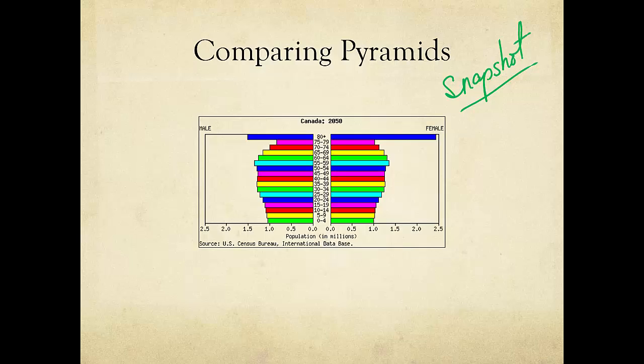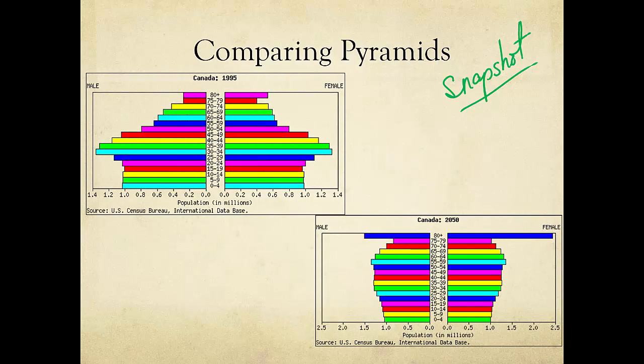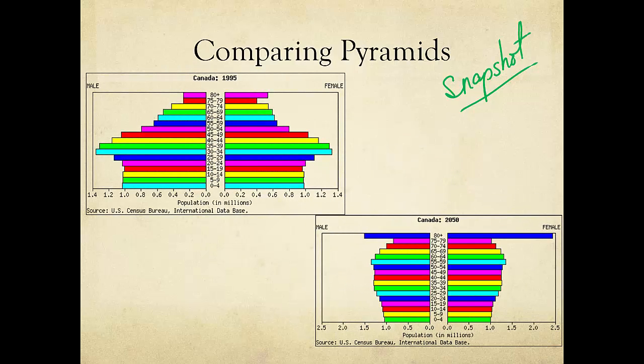Geographers can learn even more by comparing pyramids from different time periods. For example, let's look at Canada's population in 1995 and the predicted population in 2050. We can see that the large group of women in 1995 over the age of 25 have, by 2050, become the large group of women over the age of 80. By looking at pyramids over time, geographers can identify trends and patterns in a country's population.